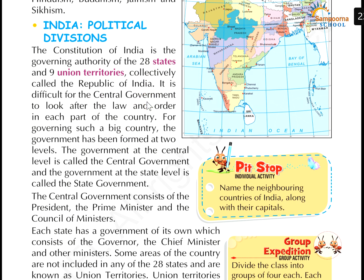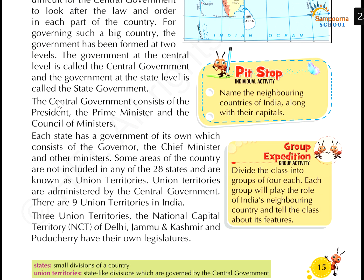It is difficult for the central government to govern every state of such a large country. So the government has been formed at two levels: one central government and one state government. The central government oversees the whole country, headed by the Prime Minister and council of ministers. Each state has a government of its own, which consists of a Governor and Chief Minister, along with other ministers.